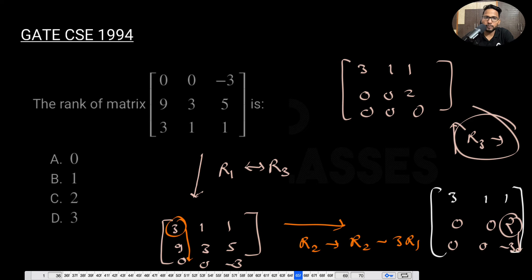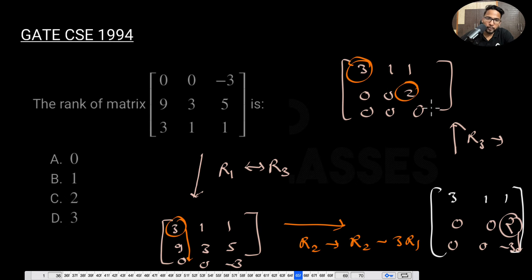After row reduction, the matrix has two non-zero rows. This is a pivot element, and this is a pivot element — there are two pivot elements. That's why the rank is 2. Very easy question — that's how you can easily find out the rank.